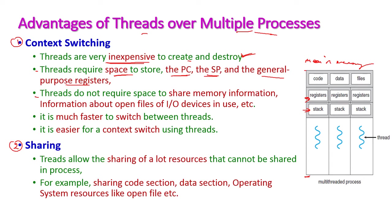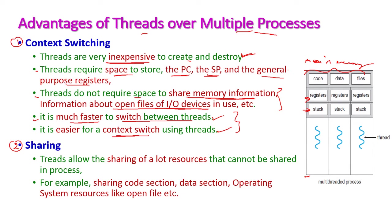Threads do not require space to share memory information, such as information about open files or I/O devices in use, because everything will be common for all threads in a process. Threads are much faster to switch between, and context switching is easier with threads.